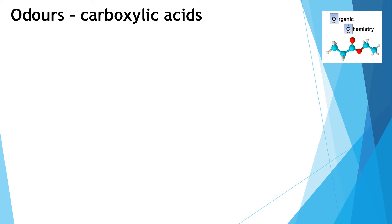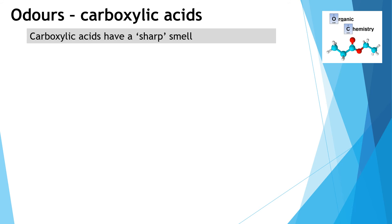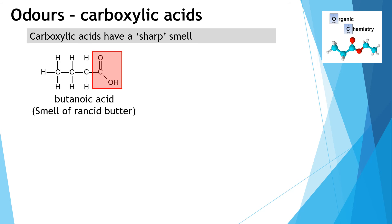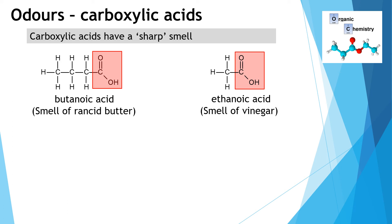Carboxylic acids also have distinct sharp odours — you can feel a sharp sensation in your nostril when you smell them. Some have particular odours: butanoic acid smells like rancid butter or milk vomited up by a baby — not pleasant. Ethanoic acid has the sharp smell of vinegar. This sharp smell in the back of the nose is the distinctive type of smell we get from all carboxylic acids.